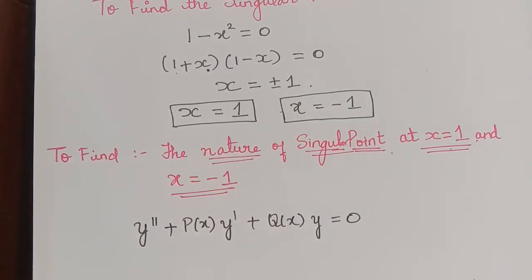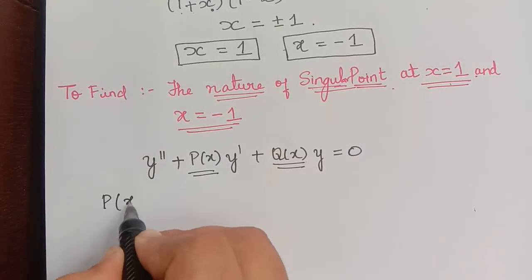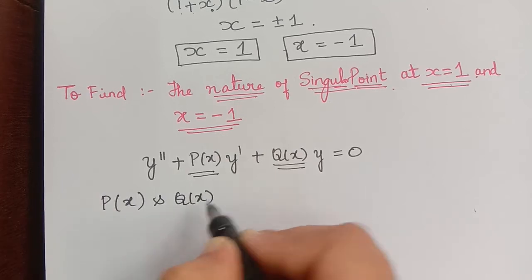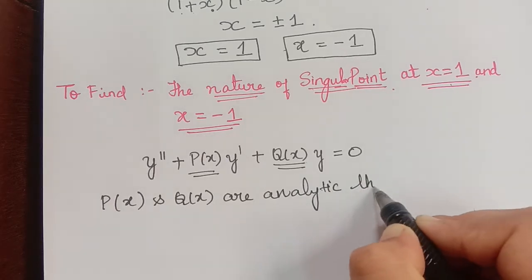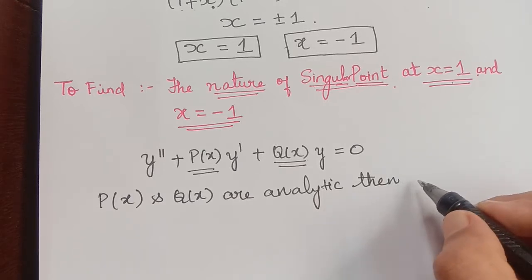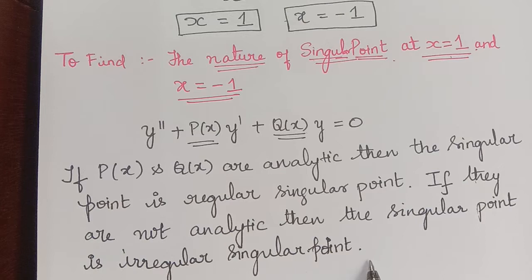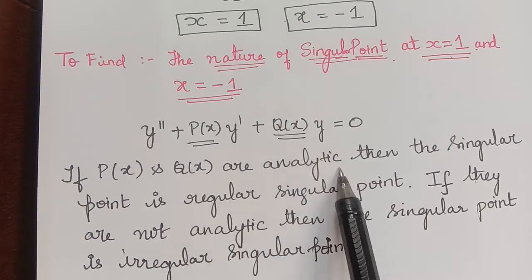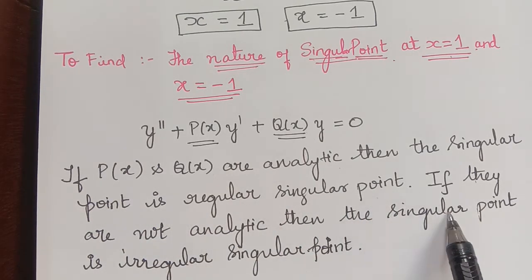After rewriting this, we have to check whether P(x) and Q(x) are analytic. If P(x) and Q(x) are analytic, then the singular point is a regular singular point. If they are not analytic, then the singular point is an irregular singular point.